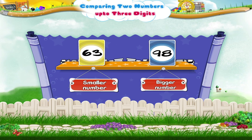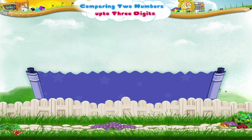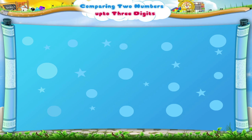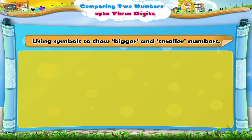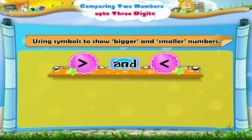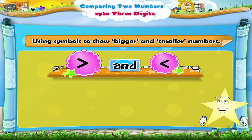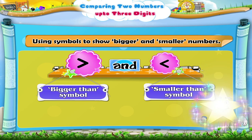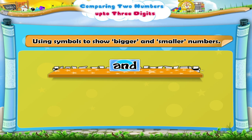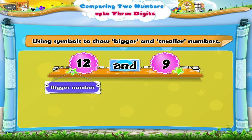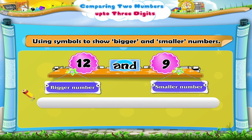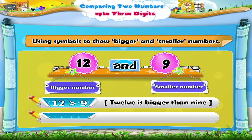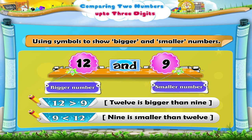That was quick! Now I'll show you something interesting — using symbols to show bigger and smaller numbers. Look at this symbol. It is called the bigger than symbol. This symbol is called the smaller than symbol. We know that from 12 and 9, 12 is the bigger number and 9 is the smaller number. When we write it, we read it as 12 is bigger than 9, and we read it as 9 is smaller than 12.